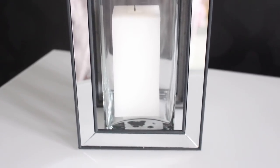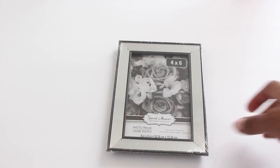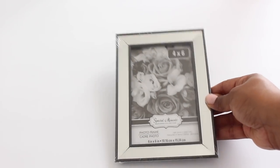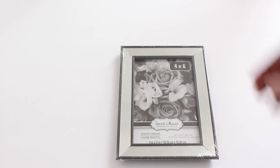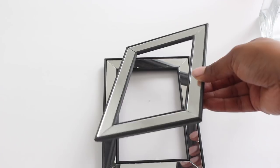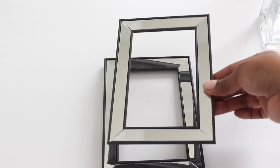For the next project, I'm going to be using two of these mirrored frames from Dollar Tree as well as the square vase. The first thing that I did was remove the contents from both of the frames.